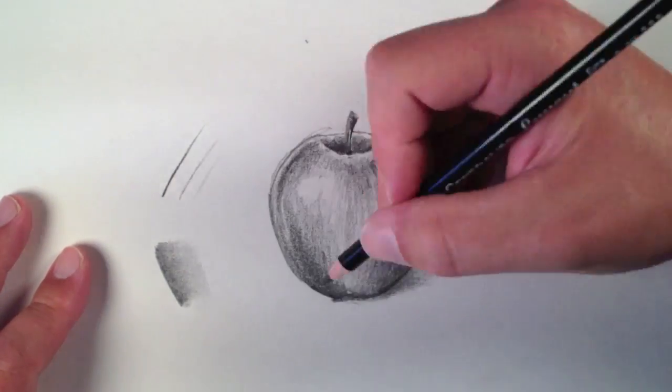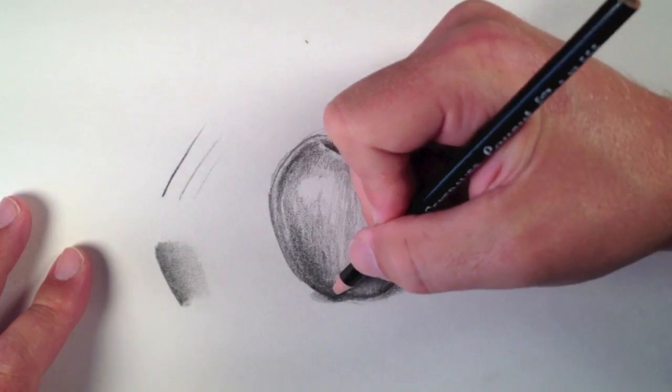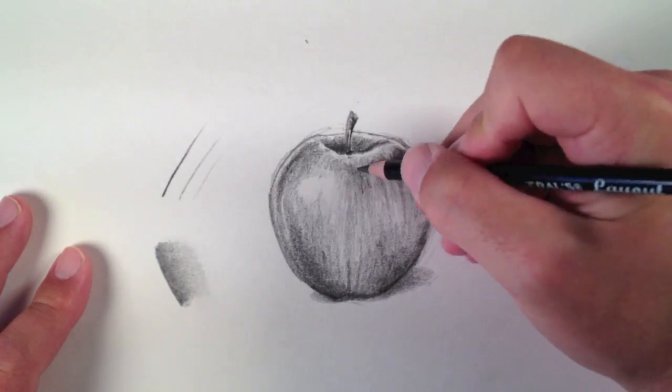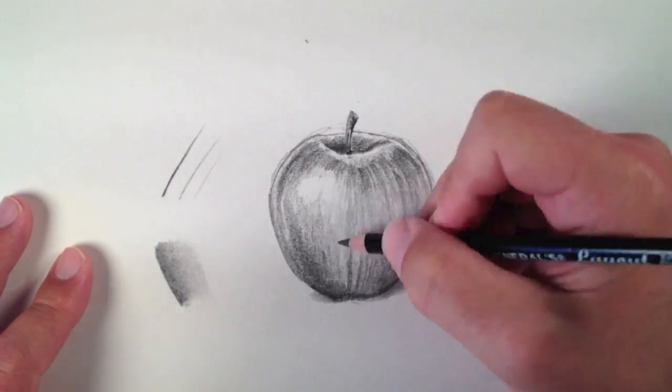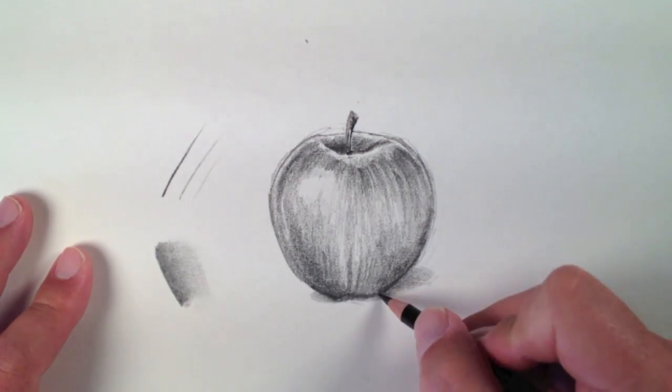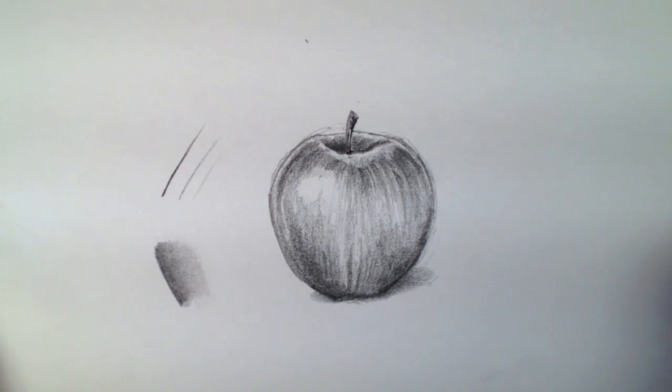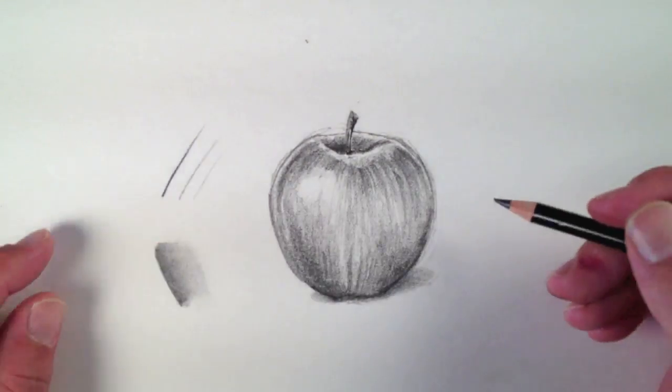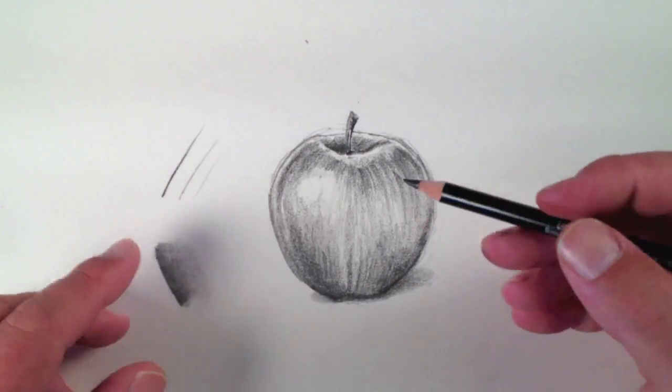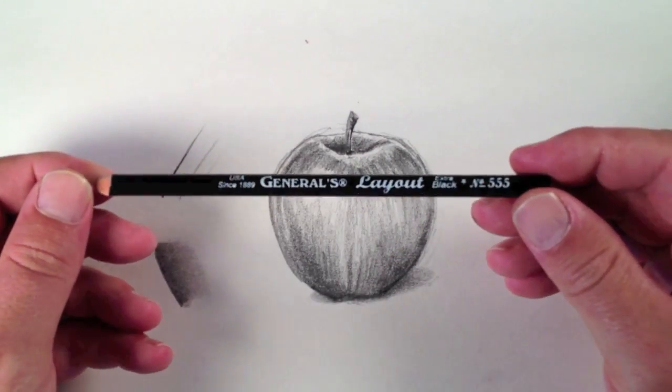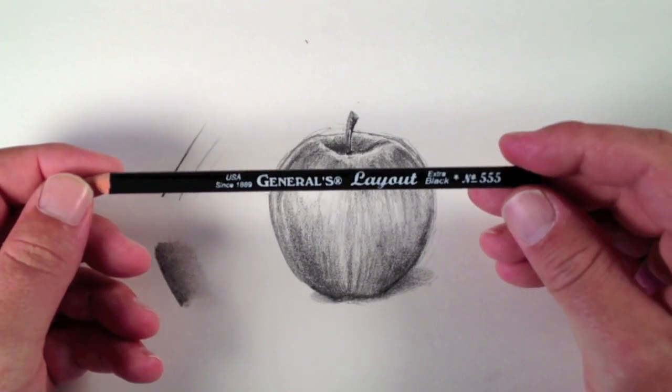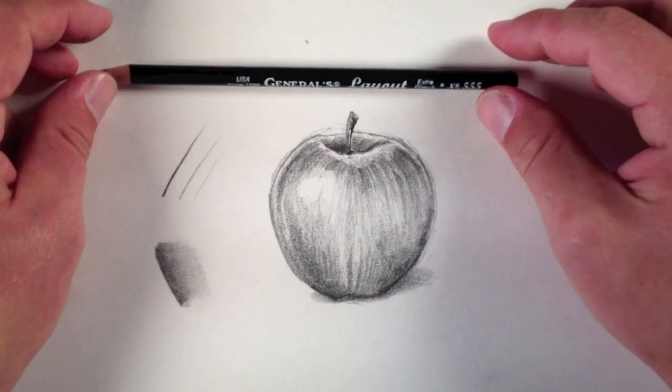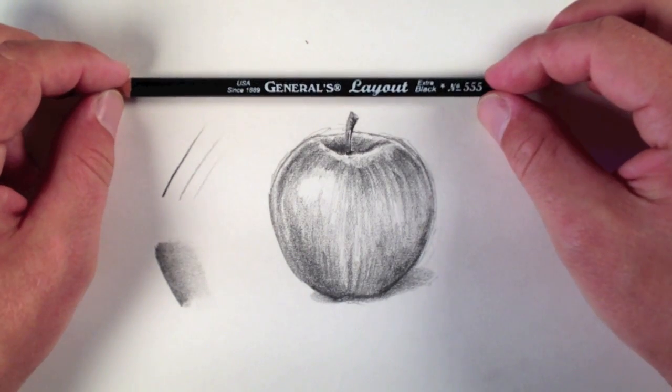So I would highly recommend this product, General's Layout Pencil, to anybody who wants to do graphite drawings. It's, like I said, my absolute favorite pencil to draw with. Most of my tutorials where I'm doing a graphite drawing, I'm using this pencil. I do like a variety of other graphite products, but I have to say that the General's Layout Pencil is definitely my favorite.